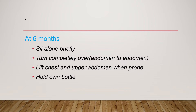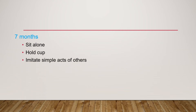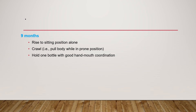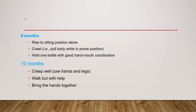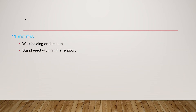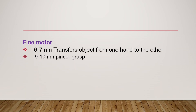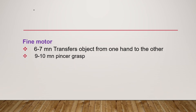At six months, they sit alone briefly, turn completely over from back to front and front to back, and hold their own bottle. At seven months, they sit alone, hold a cup, and imitate simple acts. At eight months, they sit alone steadily, drink from a cup with assistance, and eat finger food. At nine months, they rise to sitting position alone and crawl. At ten months, they creep using hands and legs and walk with help. At eleven months, they walk holding on to furniture. At twelve months, they stand alone, sit from standing position, and walk a few steps with help or alone.